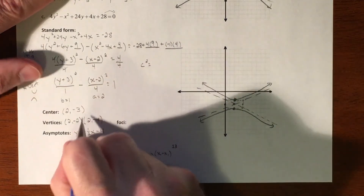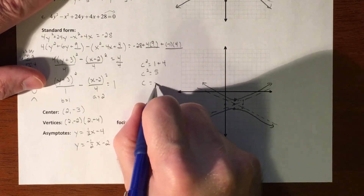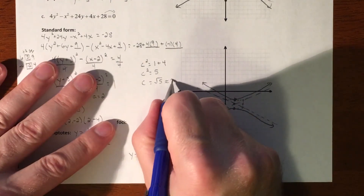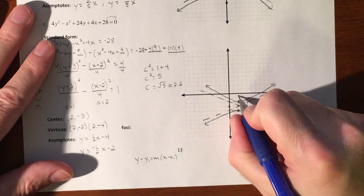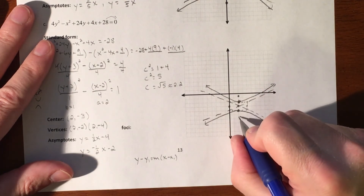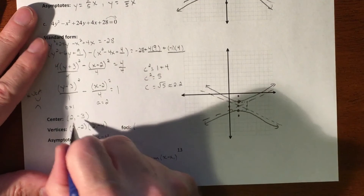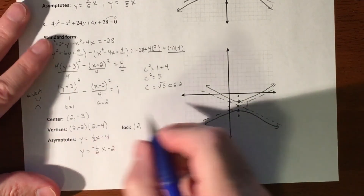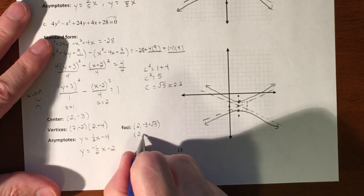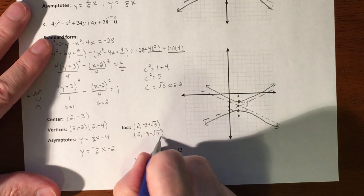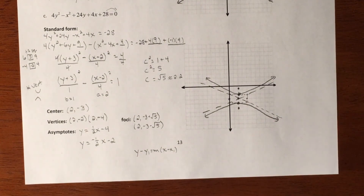For the focal points, c² equals the sum of the denominators: 1 + 4 = 5, so c = √5 ≈ 2.2. Since the graph is vertical, we move 2.2 up and down from the center. Our x value stays at 2, so the focal points are (2, −3 + √5) and (2, −3 − √5).